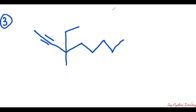The third question asks us to name this line structure. The first thing we need to do is find the longest chain, and this longest chain has to include the triple bond. Also, we need to number in a way as to give the triple bond the lower number. So we start from this end: one, two, three, four, five, six, seven, eight, and nine.